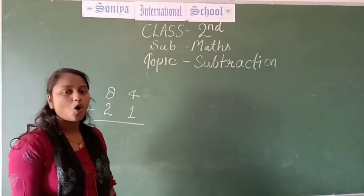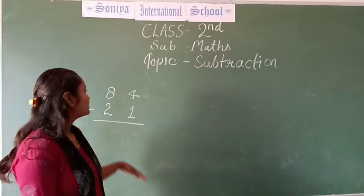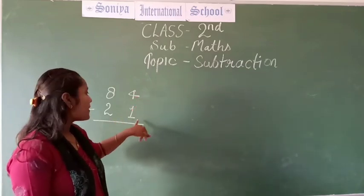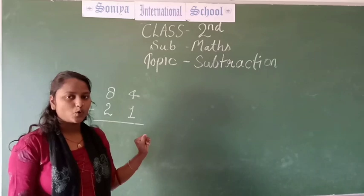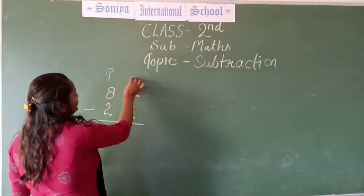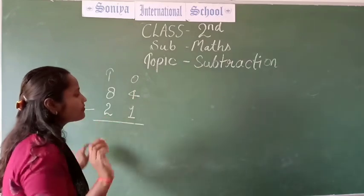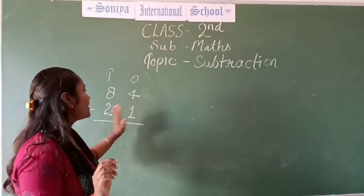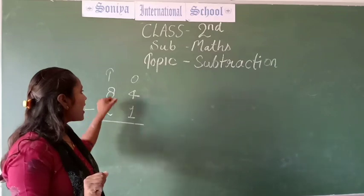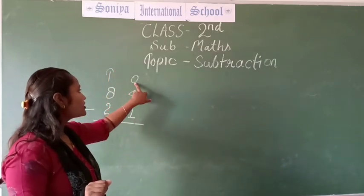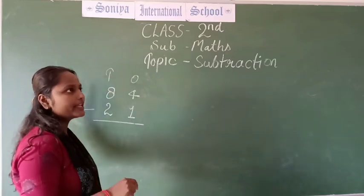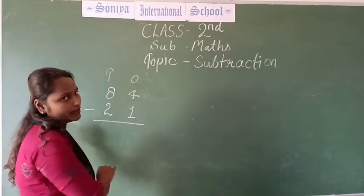Students, always remember one thing. The smaller number is minus from the bigger number. This is our 10s and this is our 1s. Always start from right to left. Because 1s is the smallest, then 10s, then 100s, then 1000s. That is the process we are going on.